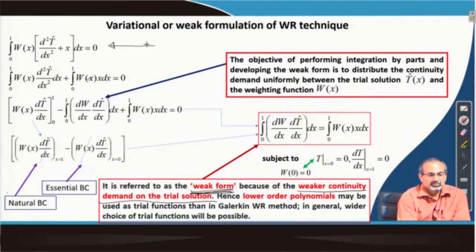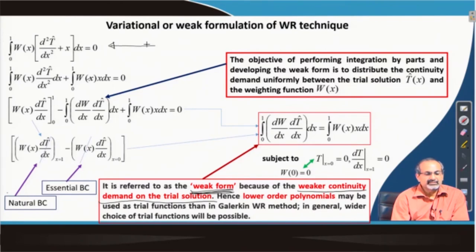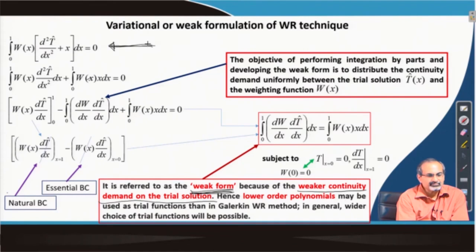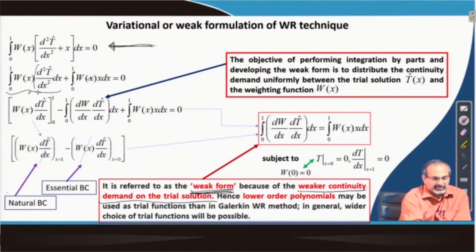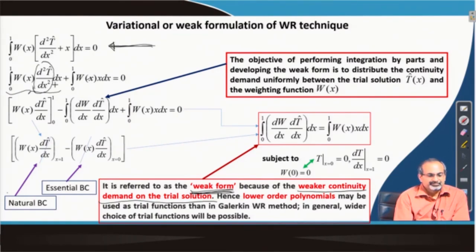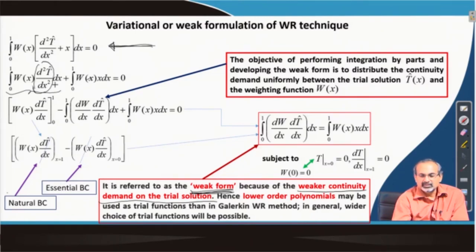The first step looks identical to what we have done earlier, and we are continuing with the same differential equation problem discussed in the previous lecture. In the weak formulation, we first identify the terms where the highest order derivative is present. We need to reduce it by some means, and for doing that, we make use of the concept of integration by parts, which helps us develop the weak form.